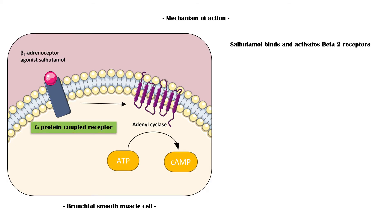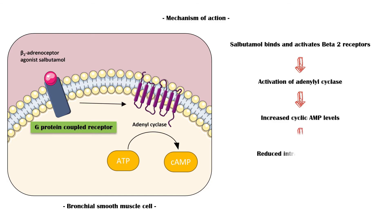The beta-2 adrenergic receptor is a G-protein-coupled receptor, and activation of this receptor leads to the activation of an enzyme called adenylyl cyclase, which increases the cyclic AMP levels within the cell. Increased cyclic AMP causes a reduction in intracellular calcium levels.